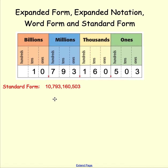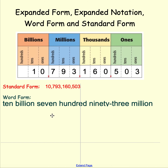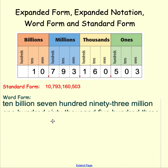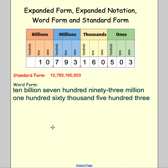First we're going to look at it in word form. In word form we're just reading the number: ten billion, 793 million, 160 thousand, five hundred three. I want to point out a couple of really important things here.